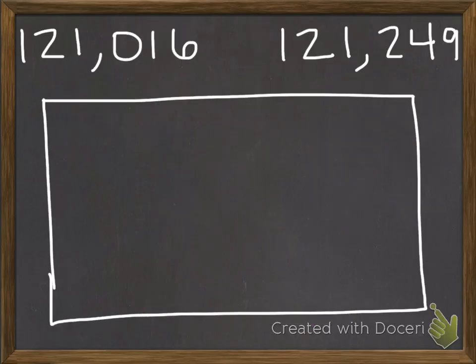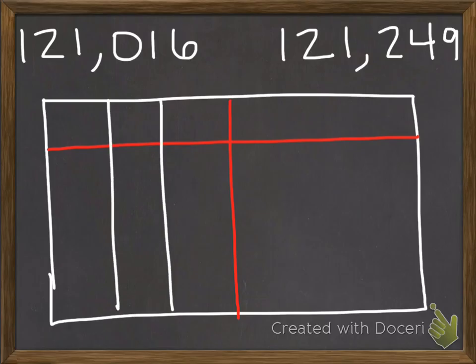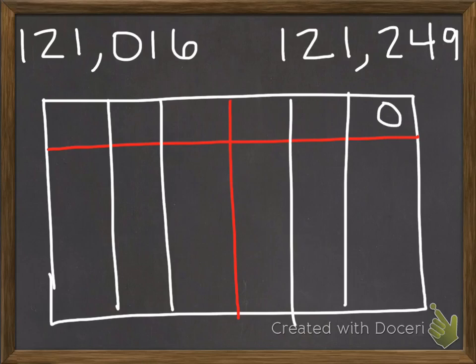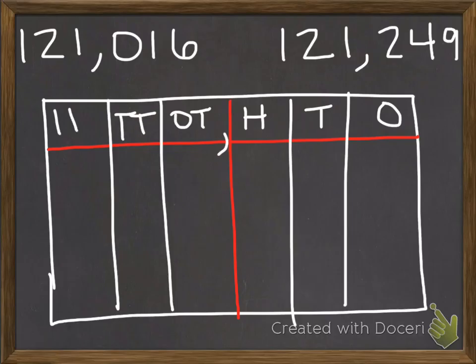Let's try another one. Again, I start out with my place value chart. I need three columns in the thousands and three columns in the units period. This is ones, tens, hundreds, one thousands, ten thousands, and hundred thousands.